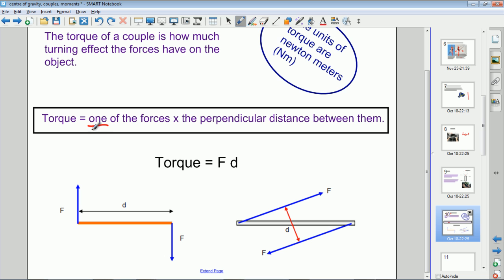Equal to one of the forces, just one of the forces, multiplied by the perpendicular distance between them. So one of the forces multiplied by the perpendicular distance between them. Obviously they're equal as well as being opposite, so we only take one of them into account when we're working out the torque. So torque is effectively equal to force times distance, and therefore it has units of newton meters - newtons for the force, meters for the distance.